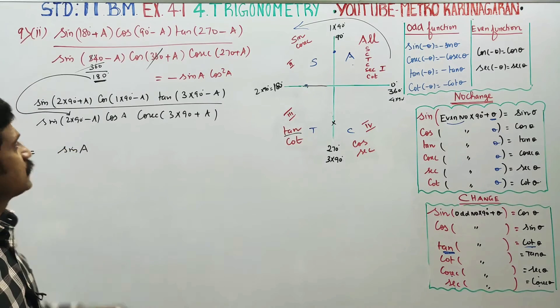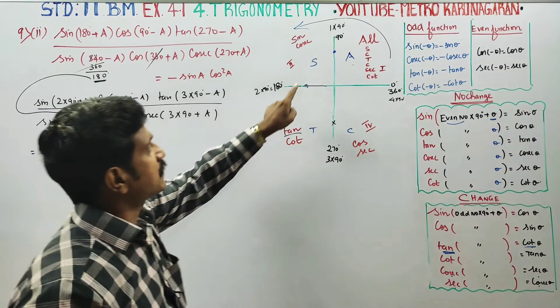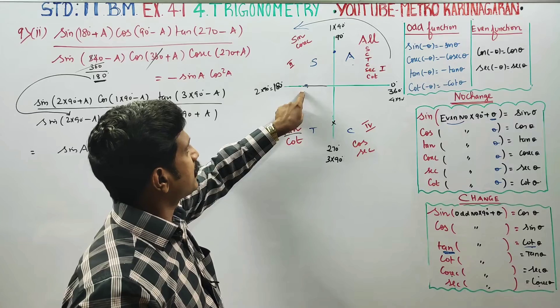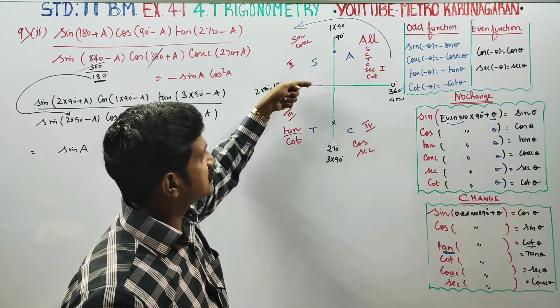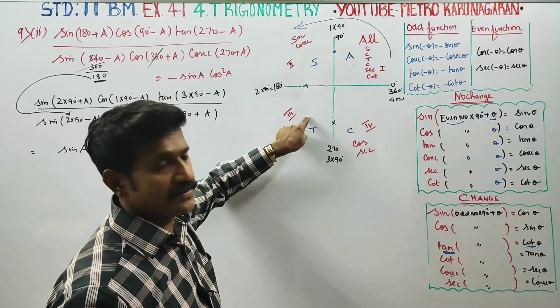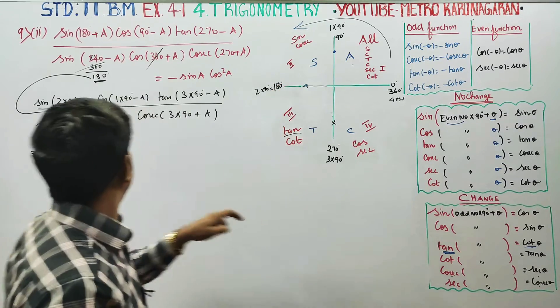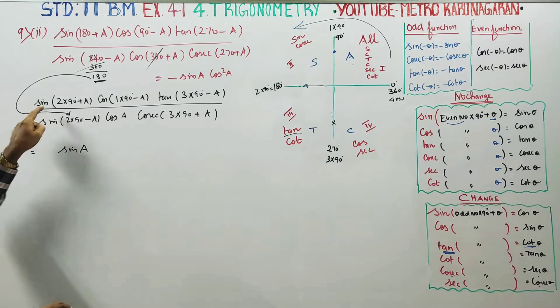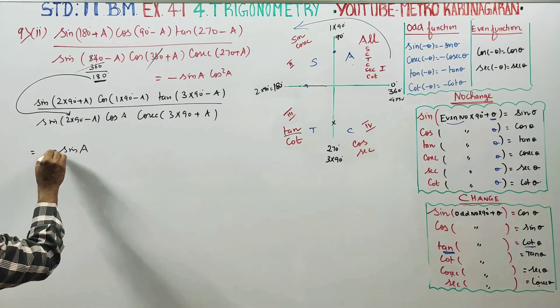Quadrant is 2 into 90 plus A. 2 into 90 is the boundary. Plus A is the view. This is tan. This is the sign. This is the minus symbol.